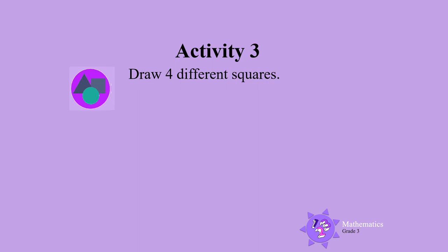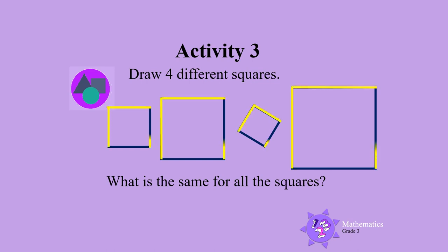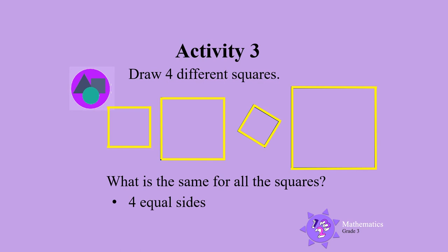Activity 3. Draw 4 different squares. Like this. What is the same for all the squares? Can you see that each square has 4 equal sides and each square has 4 corners?